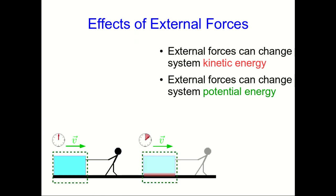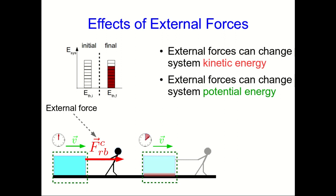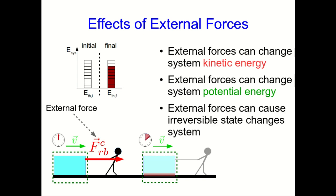Now here's a person pulling a block, and I've included the block and the floor in my system. Again there's an external force, which is the force that the rope exerts on the block. What's happening now, if the block moves at constant velocity because of this interaction, is that the system of the block and the floor simply gains thermal energy. So we see that external forces, in this case the force of the rope on the block, can also cause irreversible state changes inside the system.